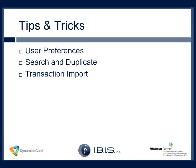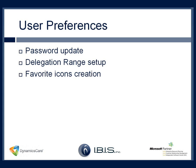Now that we've gotten a quick overview of the RecLogic application, I'd like to dig into the tips and tricks. We're going to discuss features of user preferences within RecLogic, demonstrate the search and duplicate functions, and review an expense transaction import. Within user preferences, there are three areas often used by end users and managers: password update, delegation range setup, and favorite icons creation. We'll go through each of these in detail.